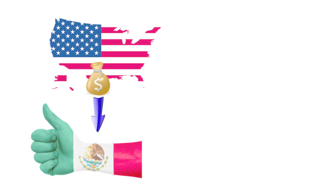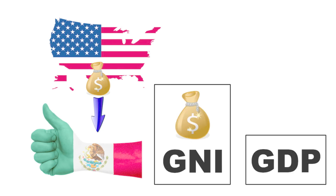Another example. If Mexican residents move to the United States to work there and send money back to their families in Mexico, they increase the GNI of Mexico, while its GDP remains unchanged.